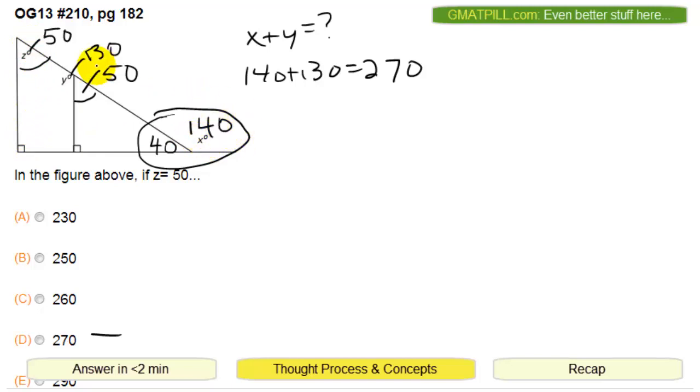So combining x and y is just 140 plus 130 and that's 270.